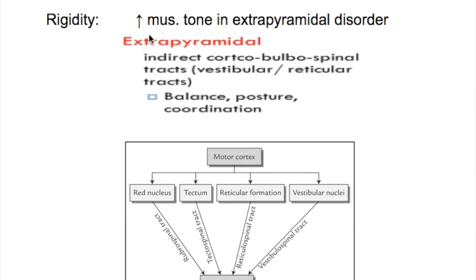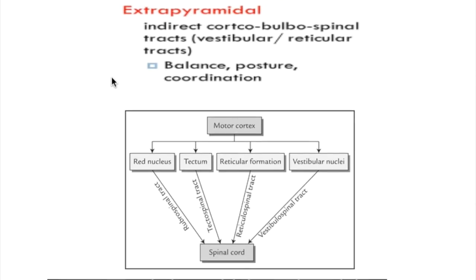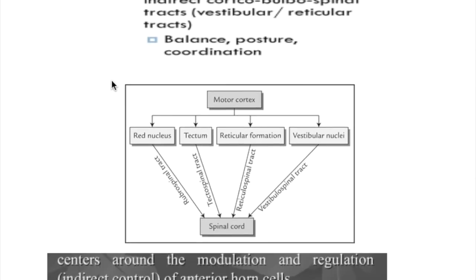Rigidity is increasing muscle tone in extrapyramidal disorders. The extrapyramidal tracts are indirect corticobulbospinal tracts that innervate the spinal cord, and unlike the pyramidal tract, they are indirect. The pyramidal tract is a direct corticospinal tract that innervates directly to the spinal cord.